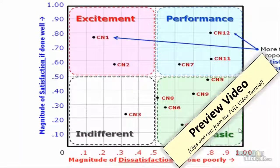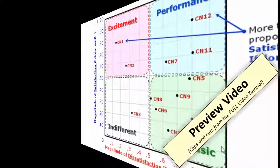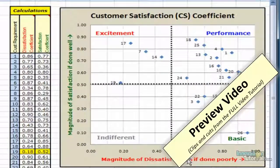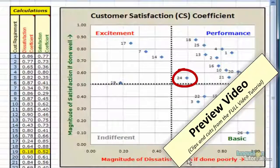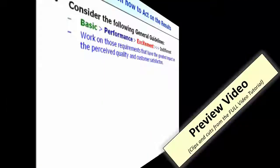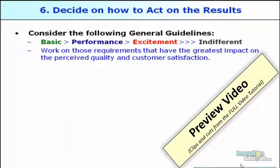So if you do well on customer need one or twelve, you're going to get an item that ends up in the middle, like number 24, which doesn't have a strong Kano classification and has a mid-level influence. This means you should look at importance, satisfaction, and Kano classification simultaneously.